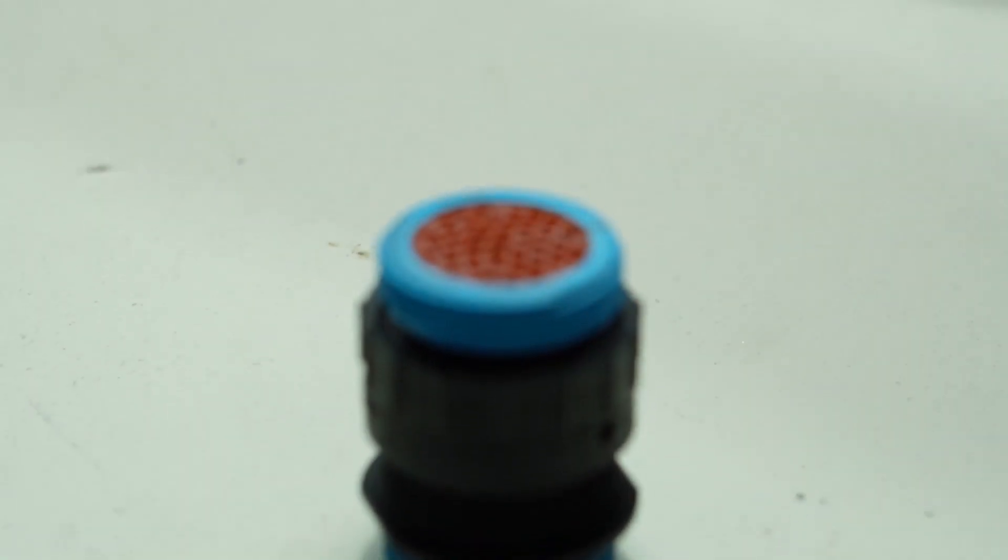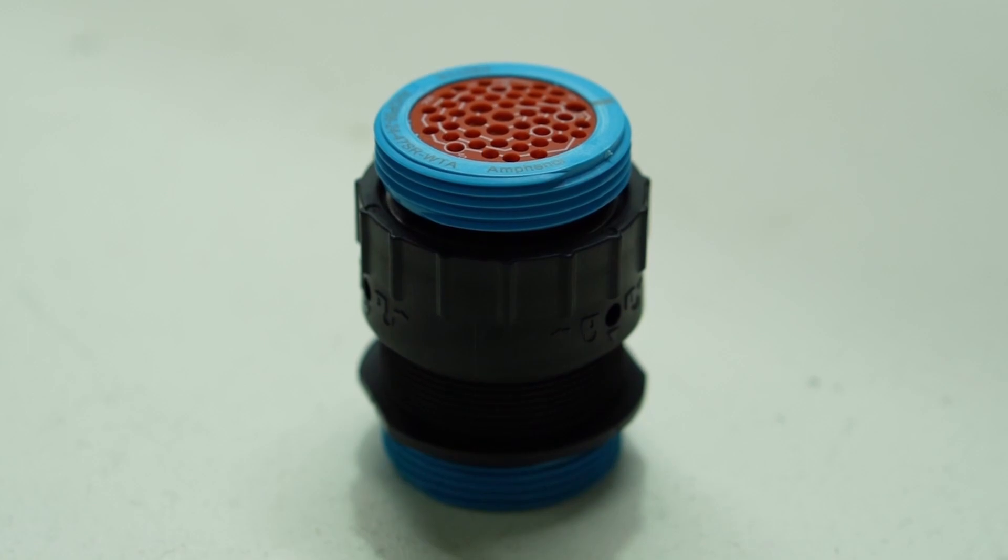So we're going to kick this episode off with cutting all the wires to length and populating the engine bay side of the bulkhead connector. We'll start with that and move on from there.